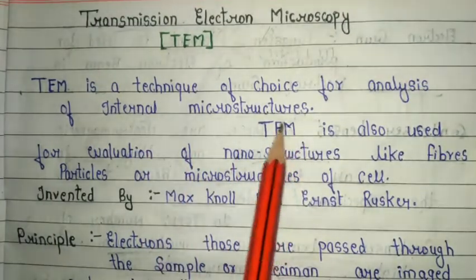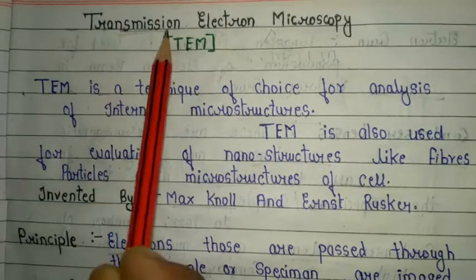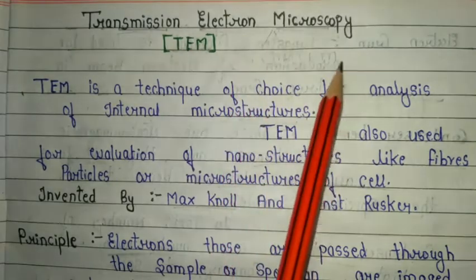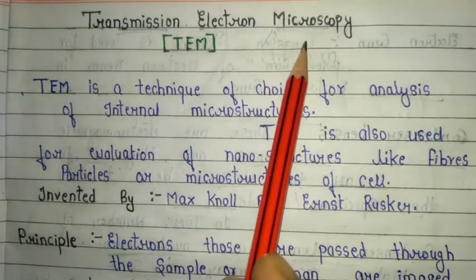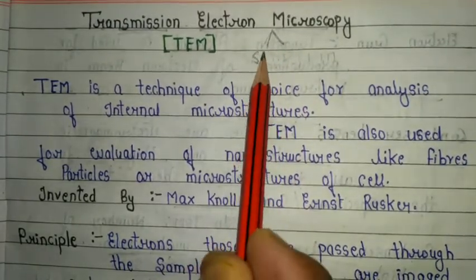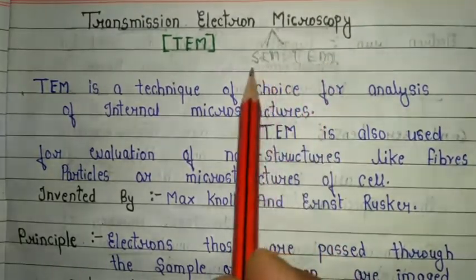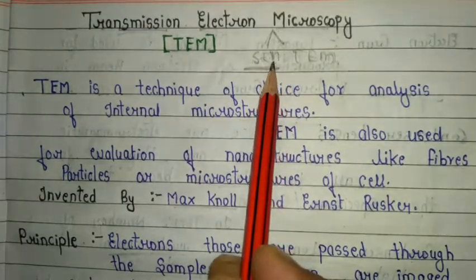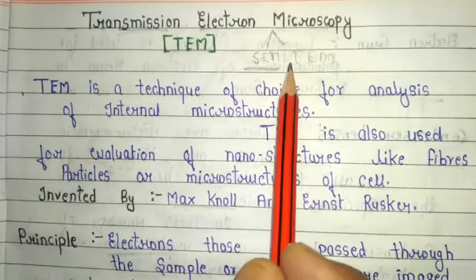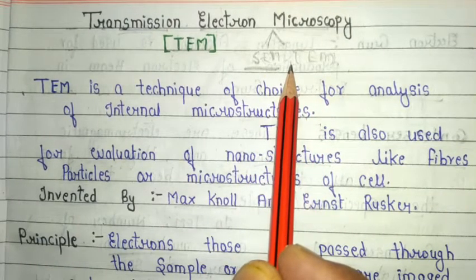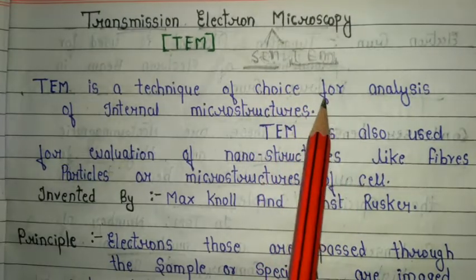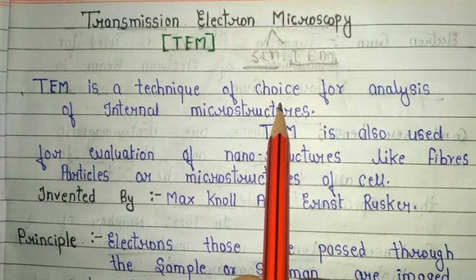Welcome back to the channel. In this video we are going to discuss transmission electron microscopy, also called TEM. It is a very important topic from scattering spectroscopy and an important type of electron microscopy. Electron microscopy has two types: SEM (scanning electron microscopy) and TEM. I previously covered SEM, and in this video I give a complete explanation of TEM.